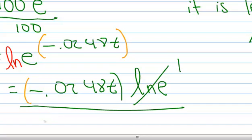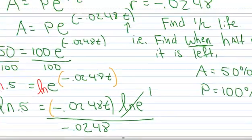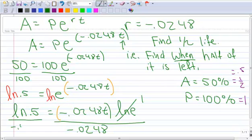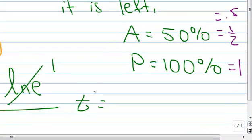Now I can divide both sides by negative 0.0248. Negative 0.0248. And then I can calculate that on my calculator. Here's my T right here. So T then turns out to be, when you calculate that out, 27.9. I'll let you do that on your own.